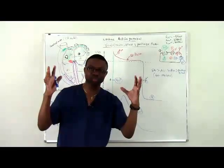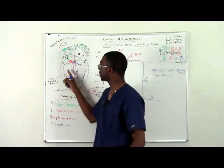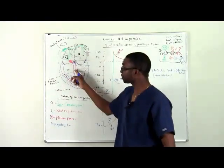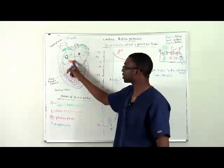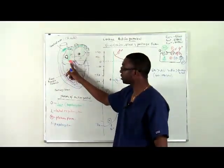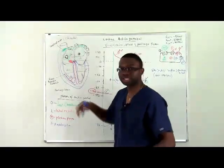When they contract, they squeeze the blood from the atrium straight into the ventricles. But the ventricles don't receive depolarization from the SA node directly—it goes through the AV node, and the depolarization of the Purkinje fibers spreads to the ventricles.